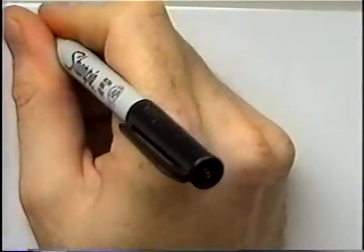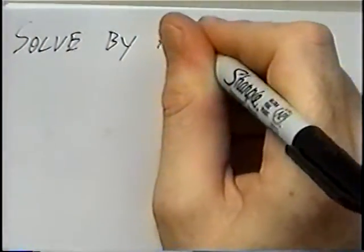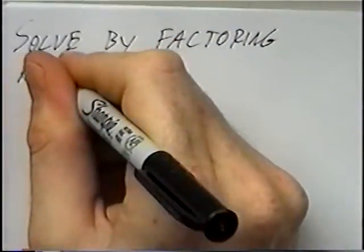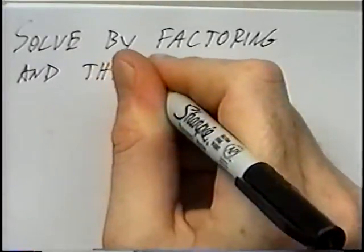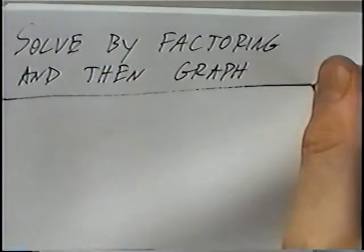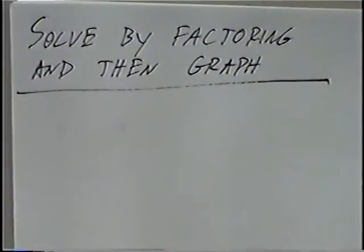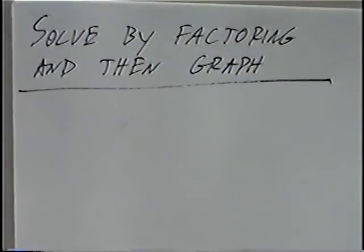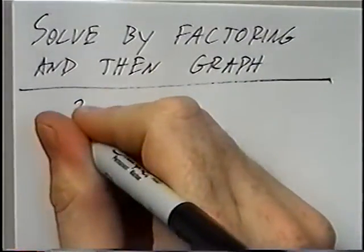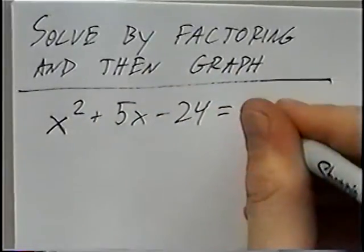The title of the last section today is 'Solve.' In this section, we'll solve quadratic equations by factoring, and then after factoring we can graph the quadratic equation. The first equation is x squared plus 5x minus 24 equals 0.